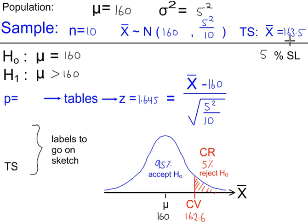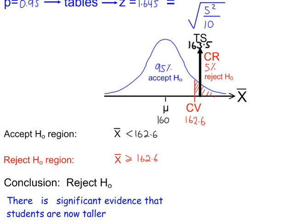The test value is 163.5, which goes in the critical region. So the conclusion is to reject H₀, because the test value is in the critical region. And state that there is significant evidence that students are now taller.